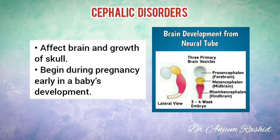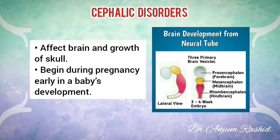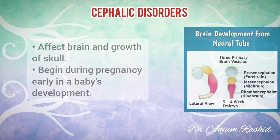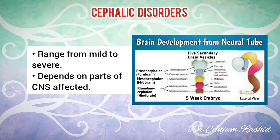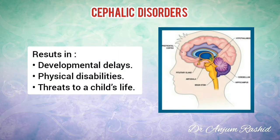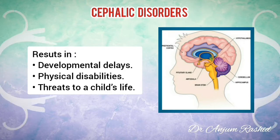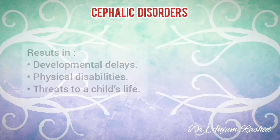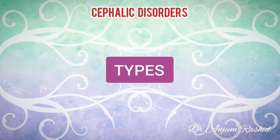Cephalic disorders affect the brain and the growth of the skull. These disorders begin during pregnancy, early in a baby's development. Cephalic disorders may range from mild to severe. This depends on the parts of the brain and central nervous system affected. These disorders can cause a variety of developmental delays, physical disabilities, and threat to a child's life. Now I will briefly discuss different types of cephalic disorders.